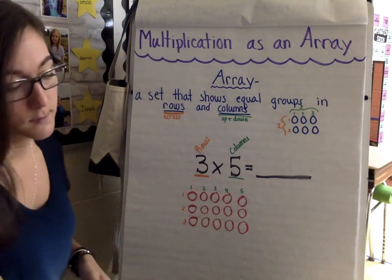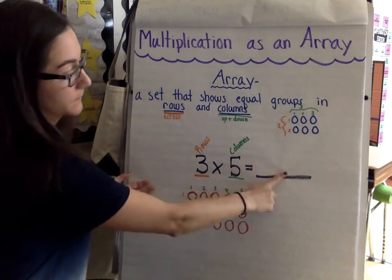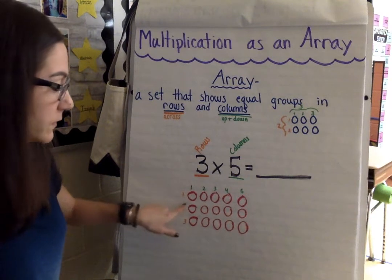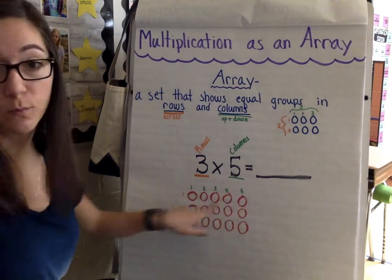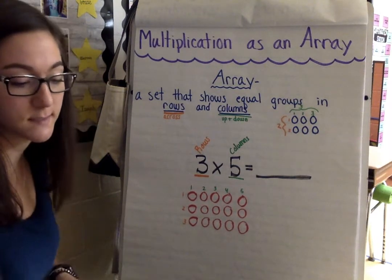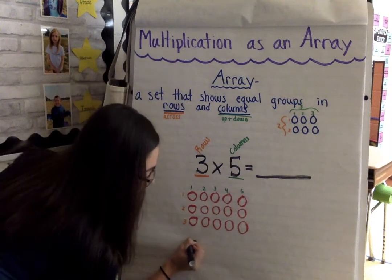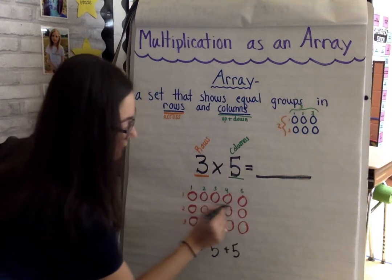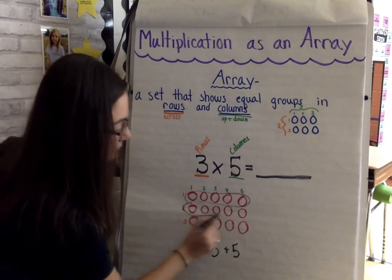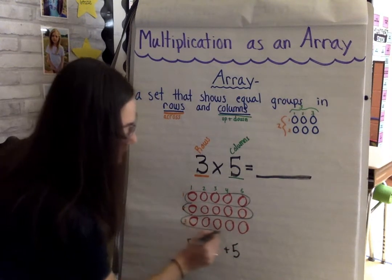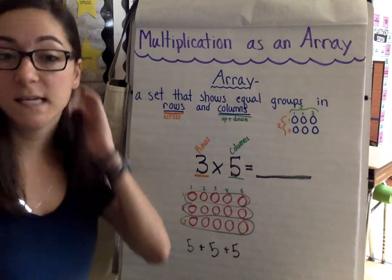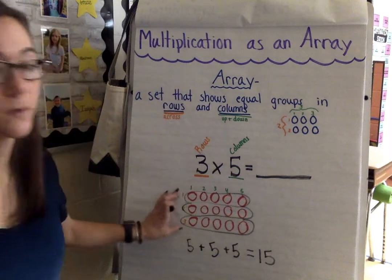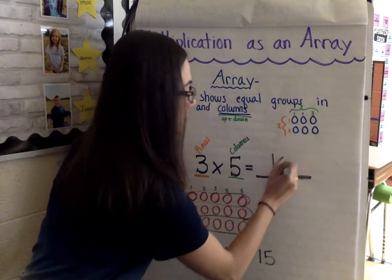Now I can count how many I have in all to find my product, or I can look for equal groups in my array. We have three groups with five in each group. I could use a repeated addition sentence: five plus five plus five. This first row is one group, the next row is the second group, and then I have three groups, so the rows make nice equal groups for us. Five plus five equals ten, ten plus five equals fifteen. If I count my array I would count fifteen circles for a product of fifteen.